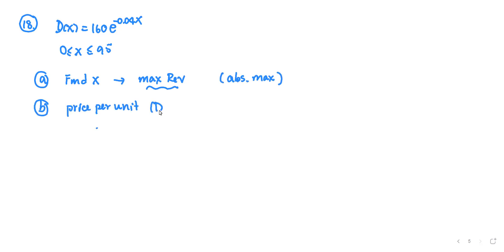The price per unit is the demand function D, because D is the price function. You're going to find the price that corresponds to the maximum revenue, which is the consequence of finding x from part a, and round to the nearest cent. This problem has nothing to do with the elasticity of demand — you could go that route, but that would require additional work.